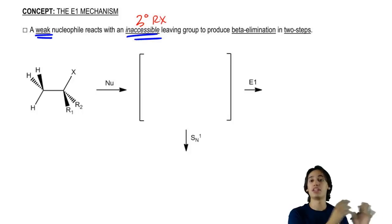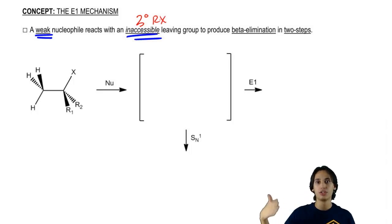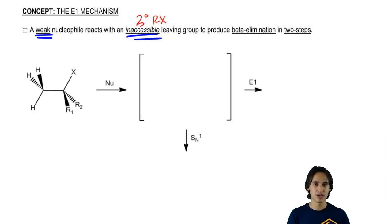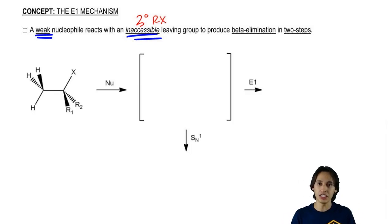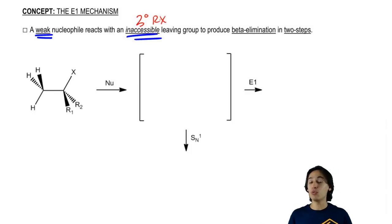It's basically as many R groups as possible. The reason that's good is because tertiary alkyl halides make really good carbocations, and remember that carbocation formation was the rate-determining step for SN1. It turns out that the same condition is also good for E1 — E1 also likes to have an inaccessible leaving group. So if we have the same exact conditions that are good for both mechanisms, how do we know when one is going to happen versus the other?